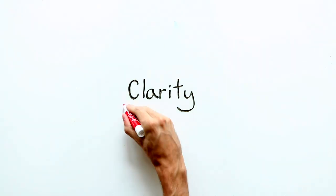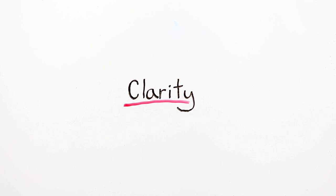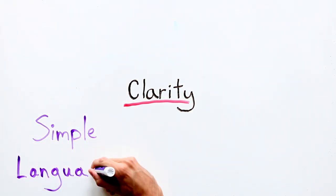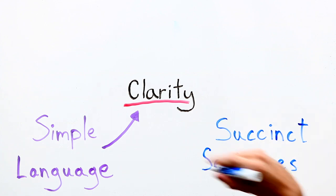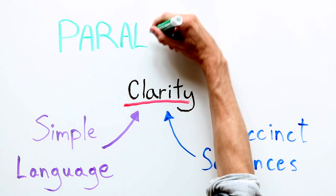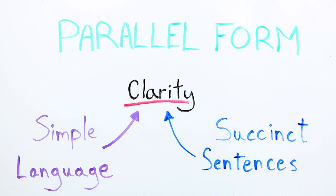It is always important to write with clarity when writing about science. Two tips are to use simple language and succinct sentences. A third is to ensure linked elements within each sentence are written in parallel form.